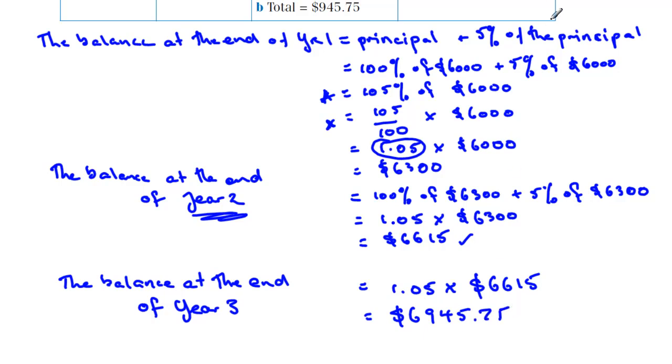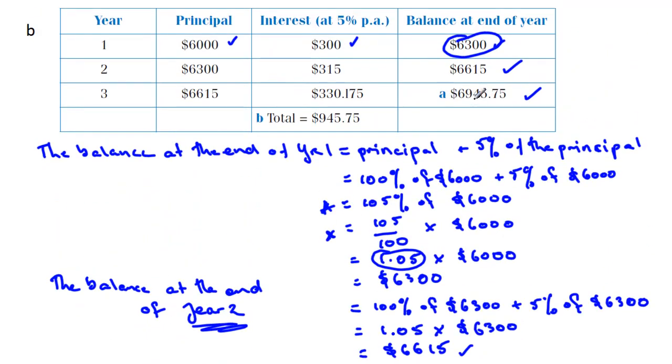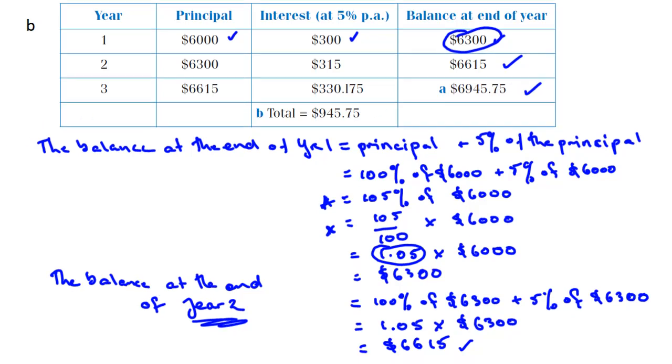And there it is up there at the bottom of that sheet now, I'll just move it down for you to have a look at. There it is there, $6,945.75.